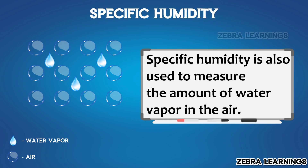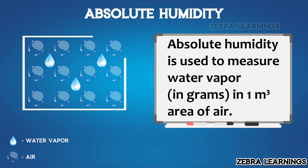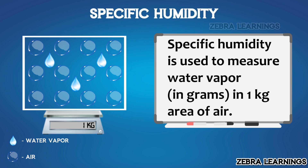Like absolute humidity and relative humidity, specific humidity is also used to measure the amount of water vapor present in the air. Absolute humidity measures how many grams of water vapor are present in one cubic meter of air, but specific humidity measures how many grams of water vapor are present in one kilogram of air.